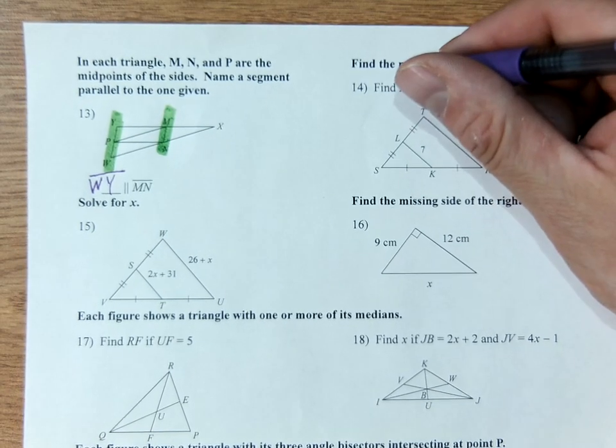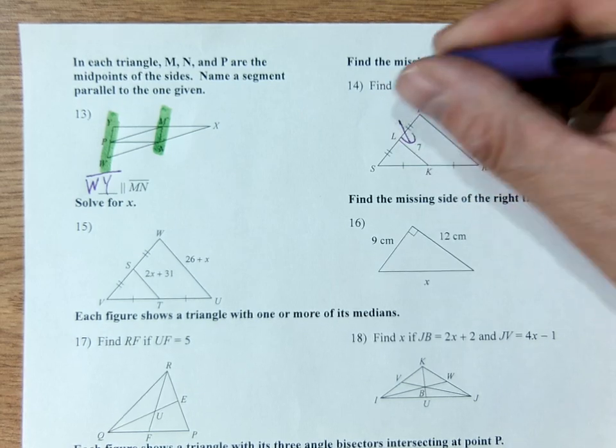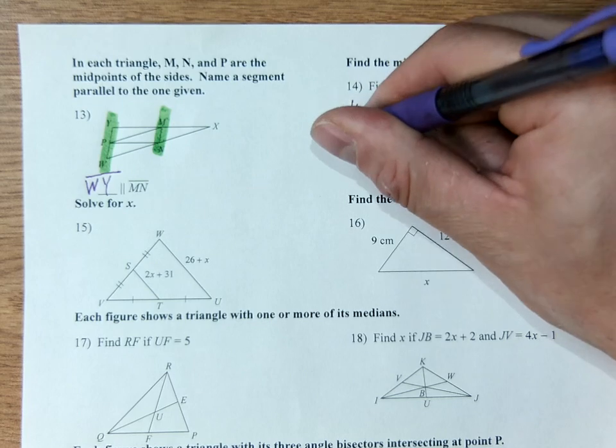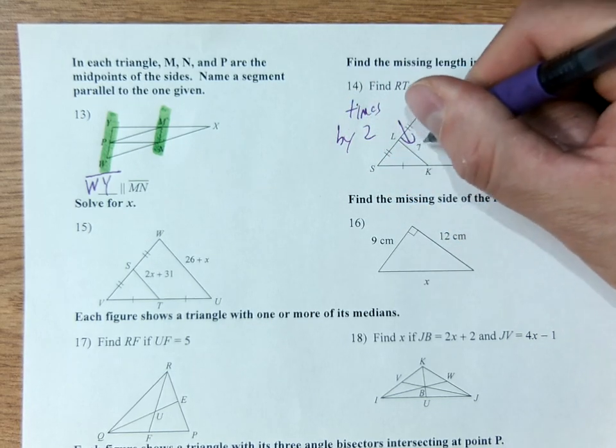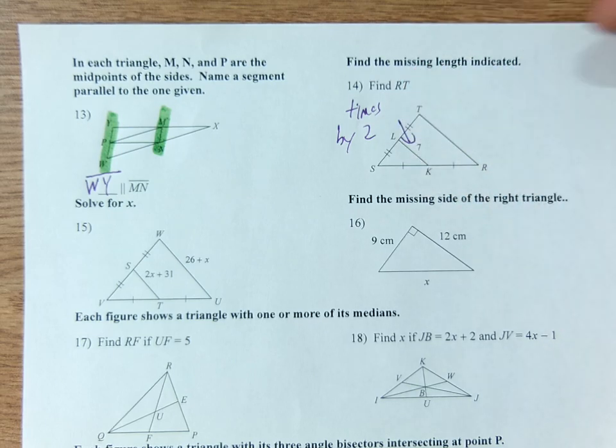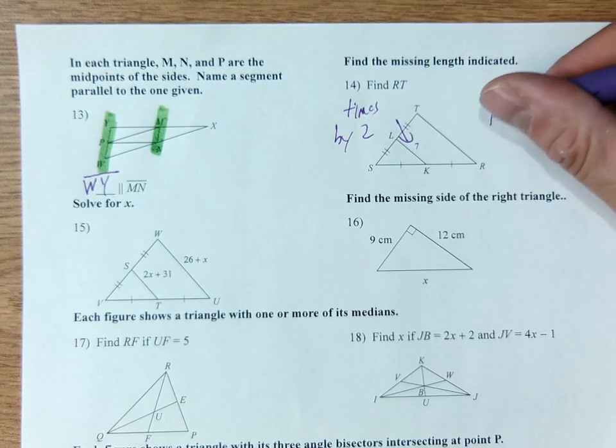Next one. Find the length of RT. This is the midsegment theorem. We double the inside segment. We times this by two. Every single time. It's inside the triangle, it's equal to twice, it's half the outside. So we times it by two to make it equal. So RT is 14.